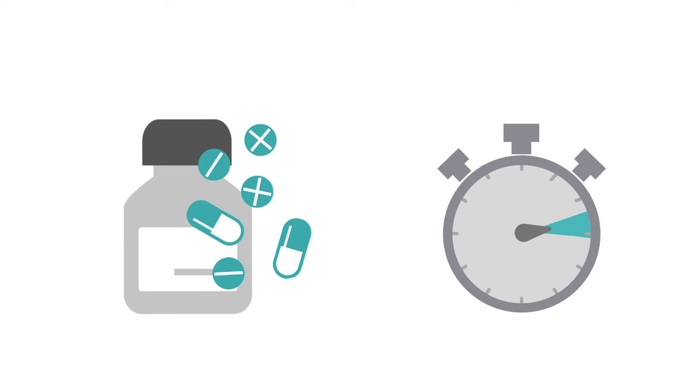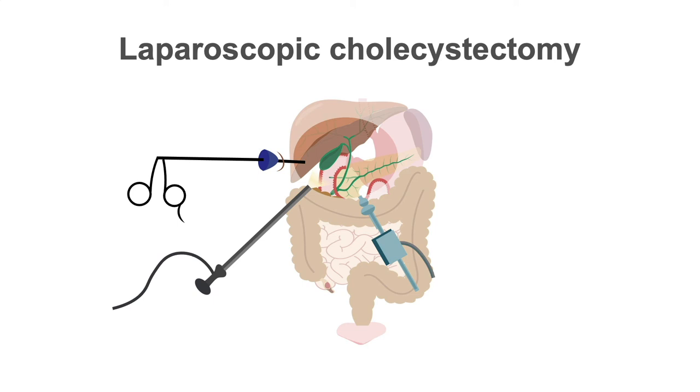A laparoscopic cholecystectomy is the gold standard for treatment for acute cholecystitis and is the preferred form of cholecystectomy. It can also be robotically done, which is also a well-accepted, minimally invasive approach. A laparoscopic cholecystectomy has the benefits of faster recovery and return to work, smaller wounds and scars, and lower risk of complications.